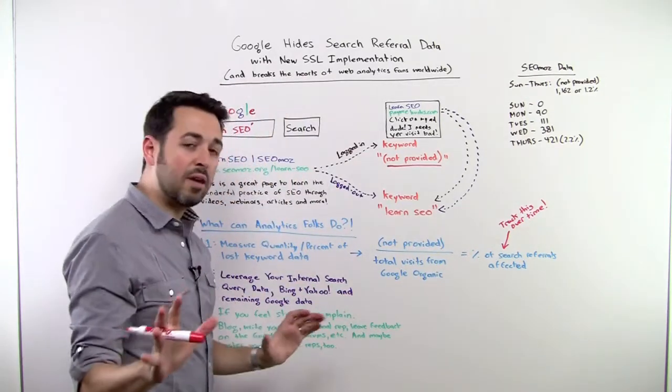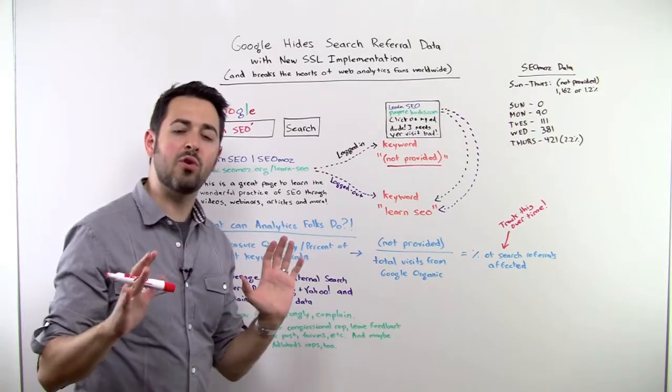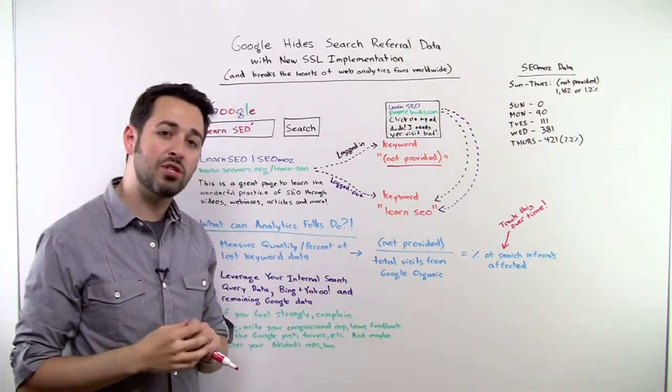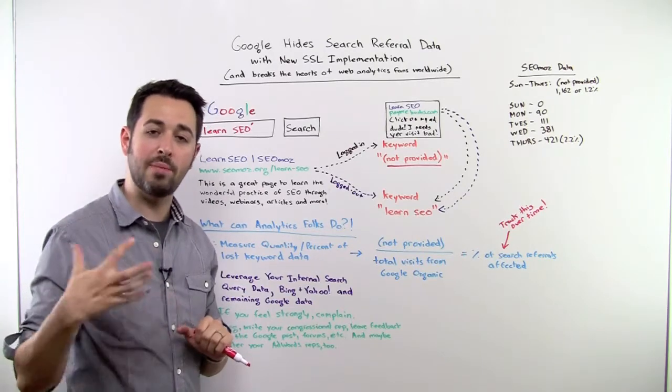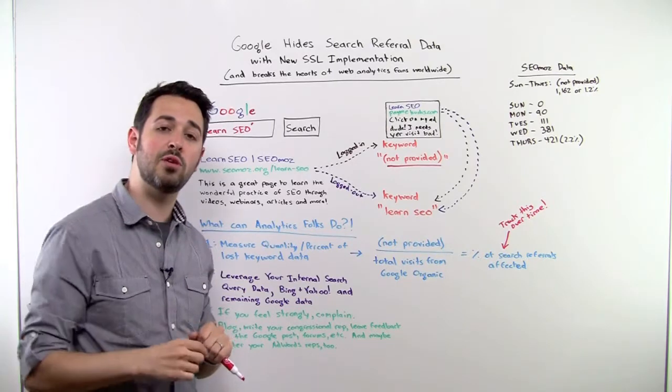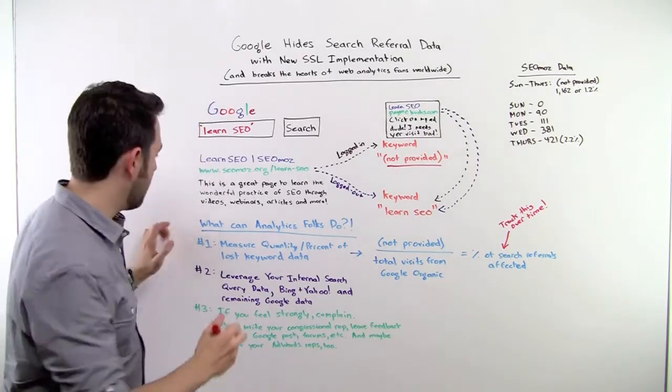But I'm going to reserve judgment on that and I'll let folks make their own decisions. I do think it's very important that we not just get upset about this. We also think about what we can do actionably. Anytime a major player in the search world or social world or inbound world makes a big change, we need to figure out what is it? How is it that we can best respond? How can we use data? How can we continue to be great marketers?